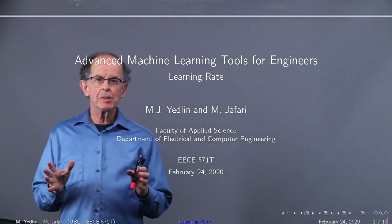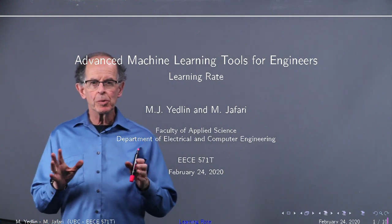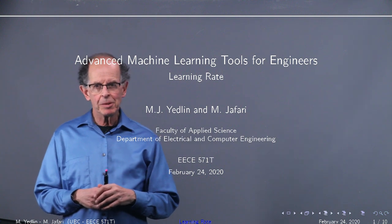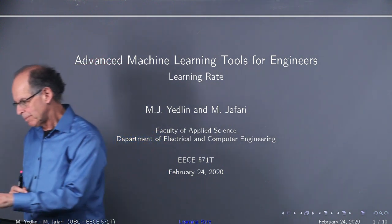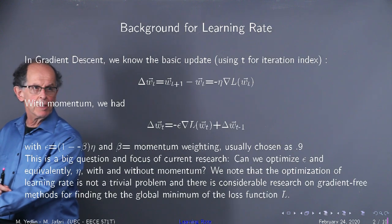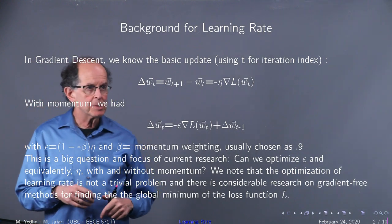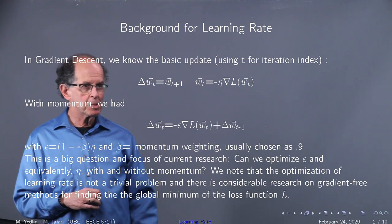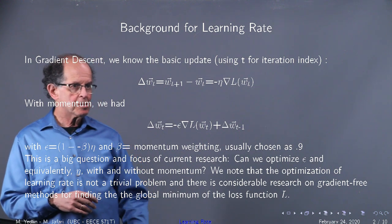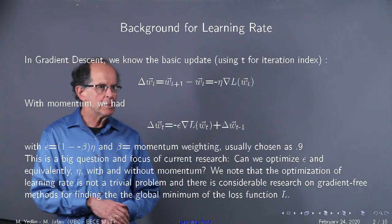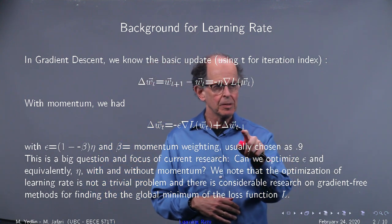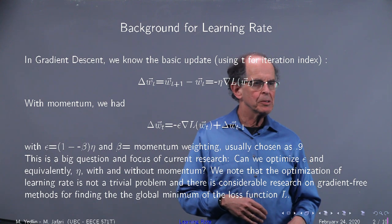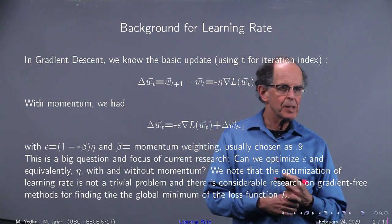Let's follow our discussion of momentum with this discussion of learning rate, and we'll see in some heuristic way how the two are connected. We have the momentum term added in the center. Can we optimize epsilon, and equivalently eta times 1 minus beta?